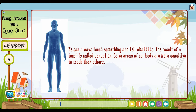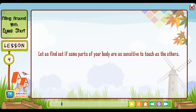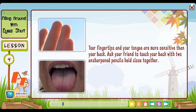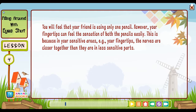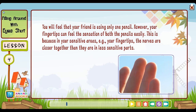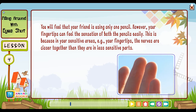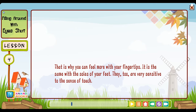Some areas of our body are more sensitive to touch than others. Your fingertips and your tongue are more sensitive than your back. Ask your friend to touch your back with two unsharpened pencils held close together — you will feel that your friend is using only one pencil. However, your fingertips can feel the sensation of both pencils easily. This is because in your sensitive areas, such as your fingertips, the nerves are closer together than they are in less sensitive parts. That is why you can feel more with your fingertips. It is the same with the soles of your feet — they too are very sensitive to the sense of touch.